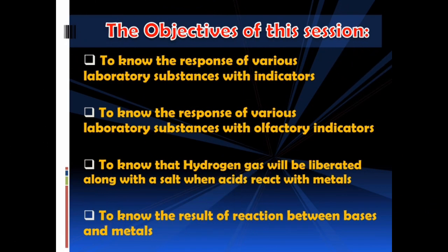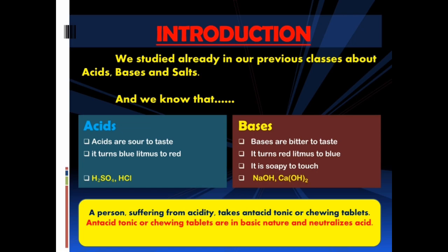The objectives of this session are listed here. First, to know the response of various laboratory substances with indicators. Next, to know the response of various laboratory substances with olfactory indicators. Then, to know that hydrogen gas will be liberated along with a salt when acids react with metals, and to know the result of reaction between bases and metals.